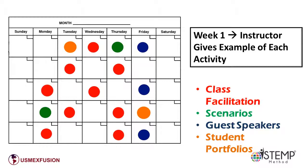Here is a visual of the four components structured in a calendar. The picture represents the first month of classes. This particular example assumes that class is daily, meeting Monday through Friday, and that it is a 50-minute class. Starting week two, students facilitate classes twice a week. After three weeks, all students perform a scenario. Every two weeks, there is a guest speaker. And every four weeks, there is a partial assessment or review of student portfolios. The open days are for the teacher to work on complex topics, give students time to prepare their presentations, scenarios, and portfolios, reinforce topics presented by students, do textbook activities, or check homework.